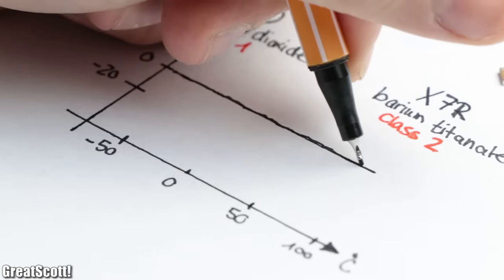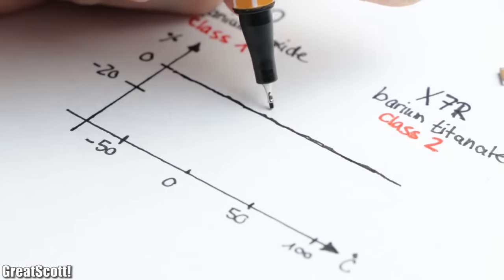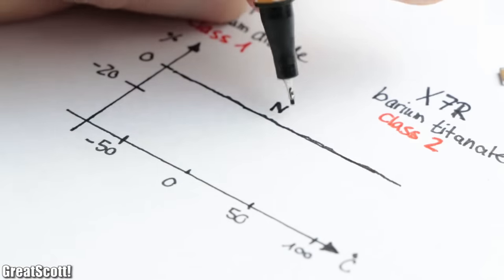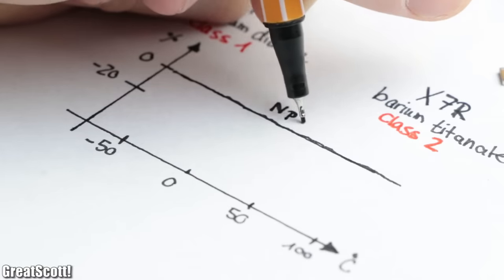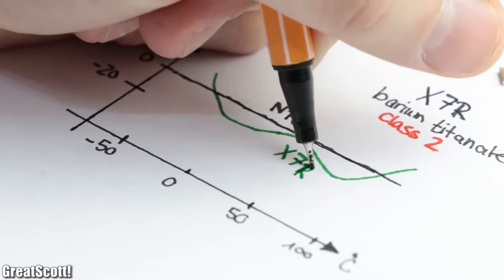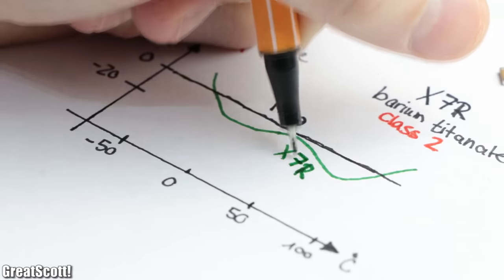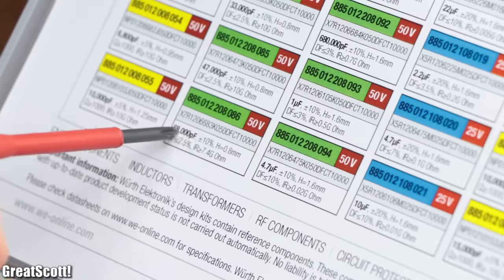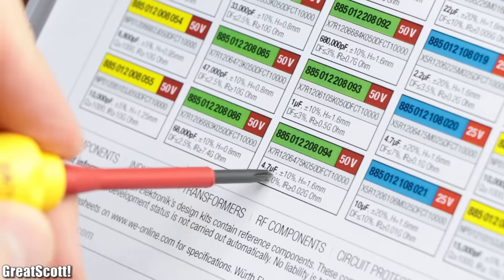Which has the effect that class 1 ceramic capacitors, like the NP0, are very stable over a wide temperature range. While class 2 ceramic capacitors, like the X7R, are not as stable over a wide temperature range, but feature way higher voltage dependent capacitances.